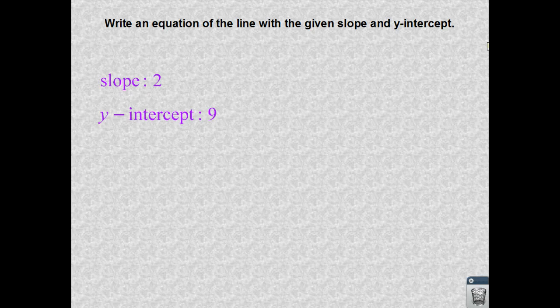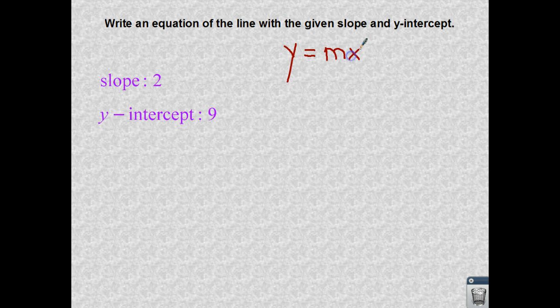First part, it says, write an equation of the line with the given slope and the y-intercept. Alright, so this is a pretty basic problem. We have talked about slope intercept form, and we know that we have y equaling mx plus b, where m is your slope of the line, and b is your y-intercept, where your line is going to cross the y-axis.